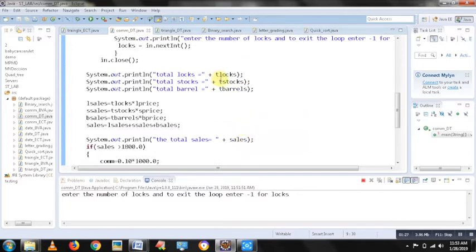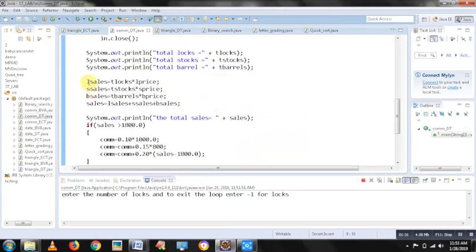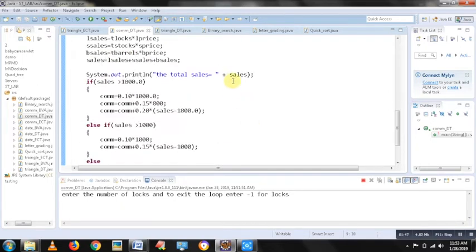Once I have total log, total stock and total barrel sold, I would compute the log sales, stock sales and barrel sales. Log sales would be total logs into log price and likewise for stock sales and barrel sales. Finally, I would compute the sales as log sales plus stock sales plus barrel sales. And finally, print what is the sales.